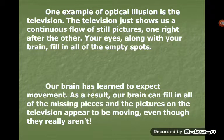One example of optical illusion is the television. The television just shows us a continuous flow of still pictures, one right after the other. Your eyes along with your brain fill in all of the empty spots. Our brain has learnt to expect movement. As a result, our brain can fill in all of the missing pieces and the pictures on the television appear to be moving.